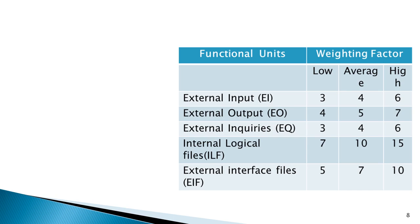To find the UFP, we use the function units with weighting factors — this is a standard table. The five function units are ranked according to their complexity: low, average, or high, using a set of prescriptive standards. Organizations that use FPA develop criteria for determining whether a particular entry is low, average, or high. After classifying each of the five function types, the unadjusted function points are calculated using predefined weights for each function type as given in the standard table.